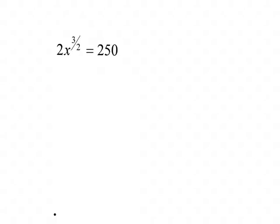This next one looks a little bit stranger. Remember, radicals are the same thing — this would be a radical if I rewrote it. What I want to do is get the expression by itself. Any time you have an exponent, get that by itself, so we get rid of the 2 first. We have x to the 3/2 equals 250 divided by 2, which is 125.